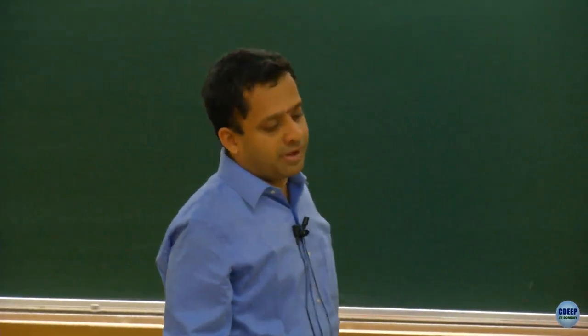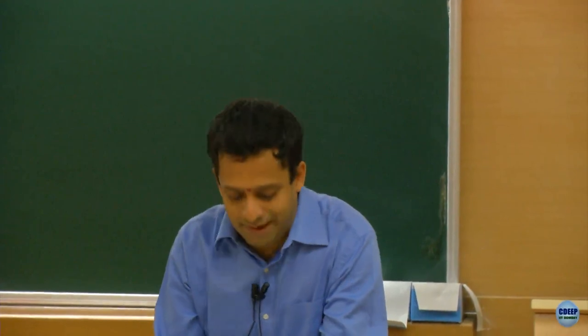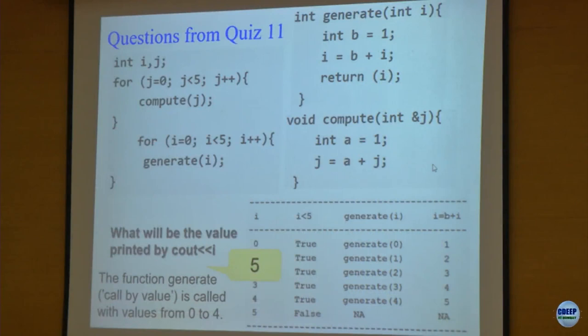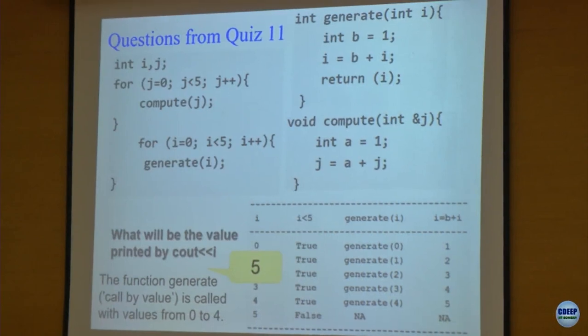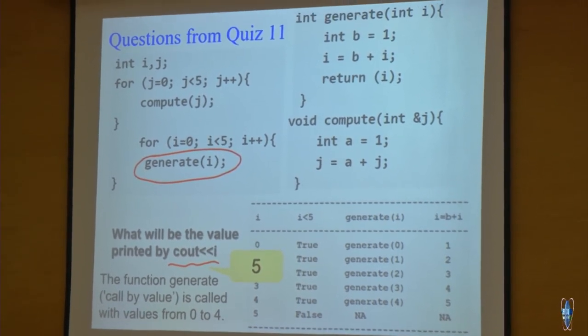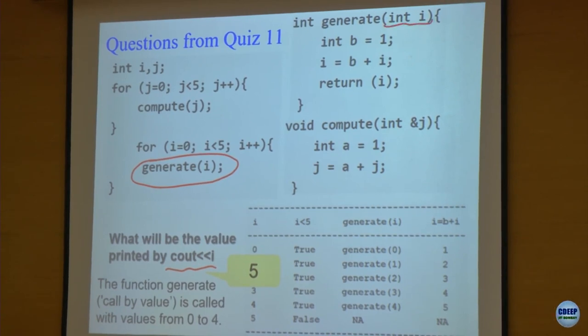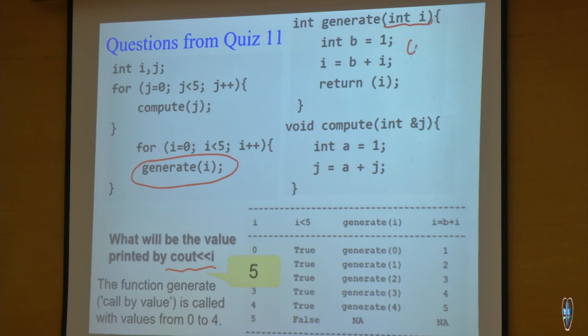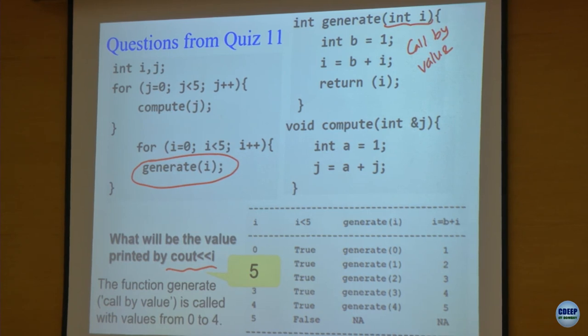We will begin with the discussion of questions from quiz 11. This question is basically almost the same as a question we had in quiz 10. Earlier we were concerned with the value of j; in this question we are concerned with the value of i. The calls to i and j are independent. As far as i is concerned, it is only generate_i that takes as input the value of i, and i is passed by value to generate.